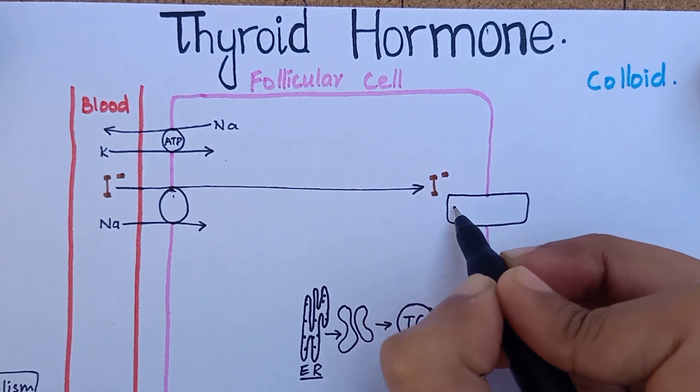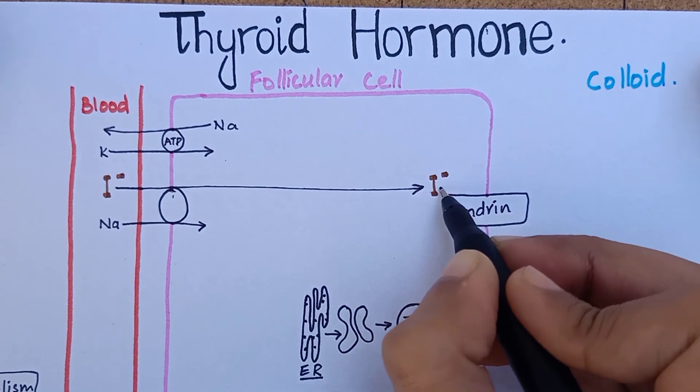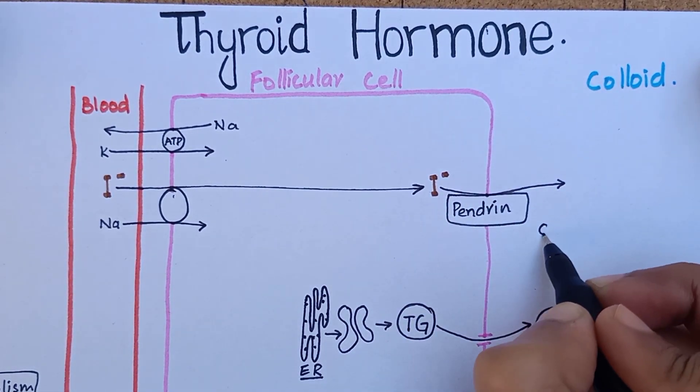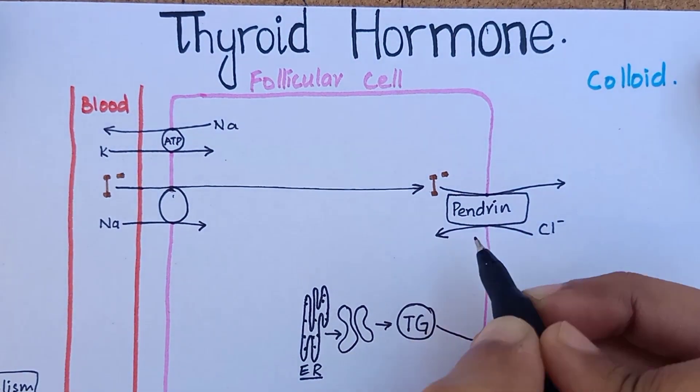The iodide ion is transported into the colloid across the apical membrane by this molecule called pendrin. Pendrin acts as a chloride-iodide countertransporter.